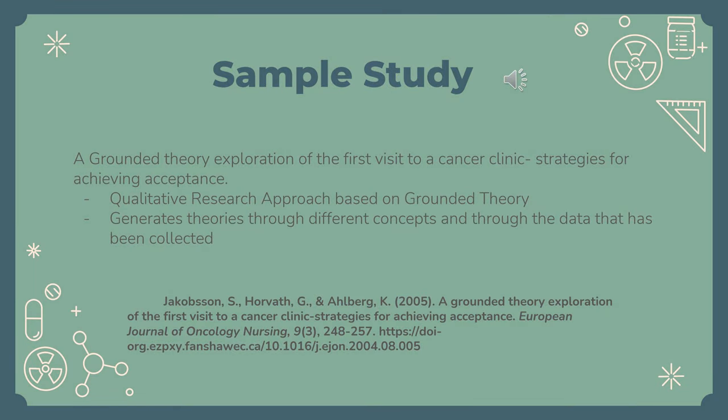Here we have provided a sample study that utilizes a grounded theory method to further complete a qualitative research study. The title of the study is A Grounded Theory Exploration of the First Visit to a Cancer Clinic: Strategies for Achieving Acceptance. The purpose of the study was to investigate and identify various cancer patients' first visit and experiences at the cancer clinic and how these patients can reach acceptance of the impact cancer has on their lives. Five different categories were identified throughout the study as being important for reaching acceptance: action, knowledge, respect, continuity, and confidence.